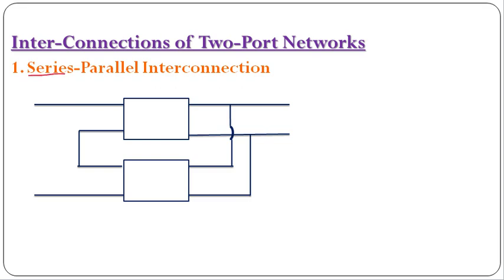Series-parallel means the input port will be connected in series and the output port is connected in parallel. I have considered two networks here — network A and network B. Their input ports are connected in series: the current leaving network A is the incoming current for network B. At the output port, the voltage at the output terminal of both networks is the same, so the output port is connected in parallel.